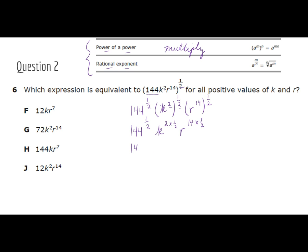Okay, we'll go ahead and multiply those together. I've got K to the two times one half. That's K to the first. And then R 14 times a half gives me R to the seventh.